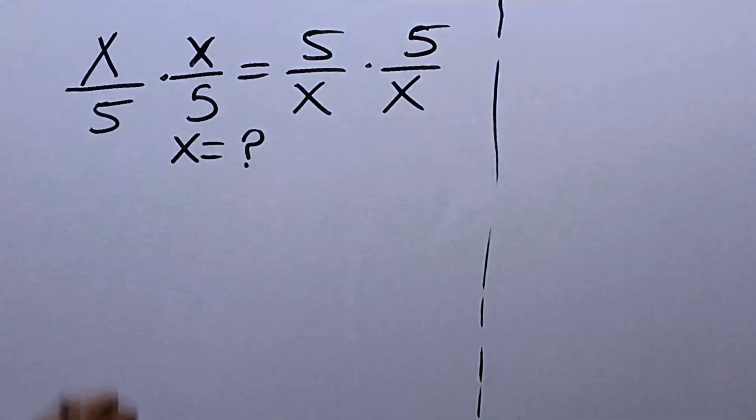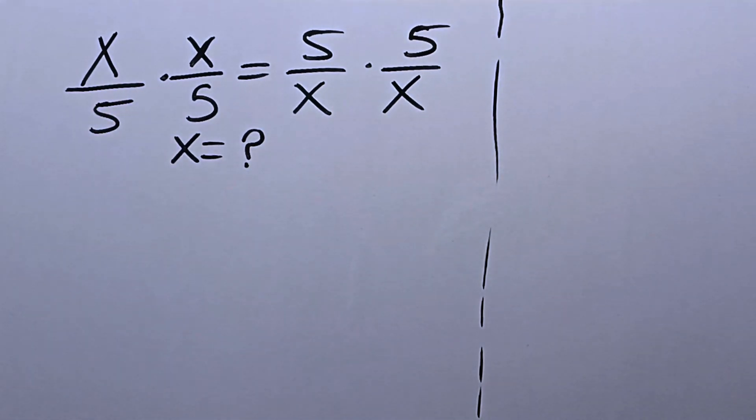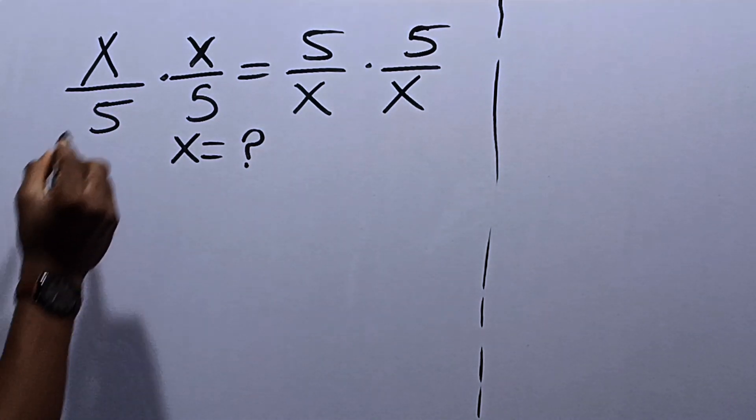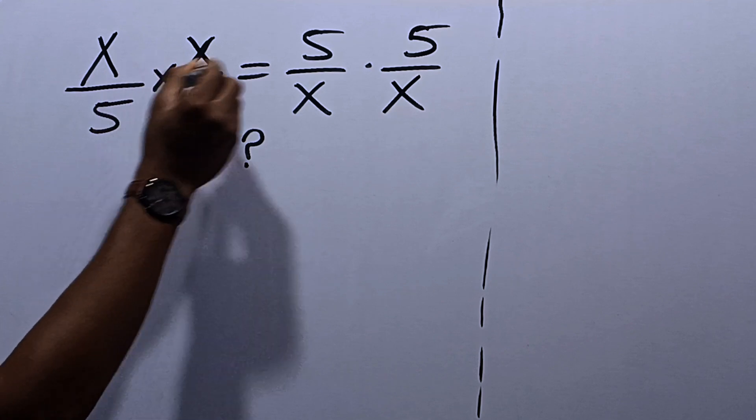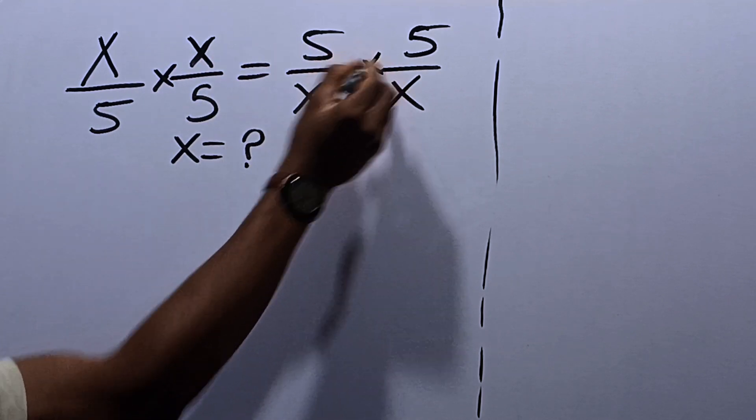First and foremost, when you see dots, it means multiplication. And you can easily replace this with 'multiplied by' and 'multiplied by'.